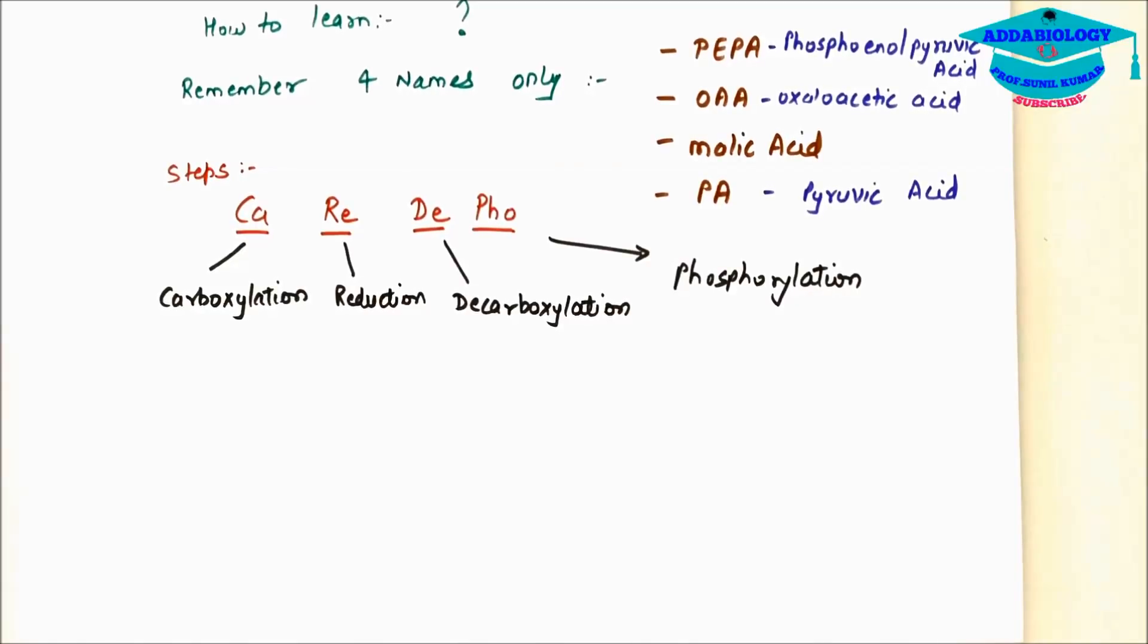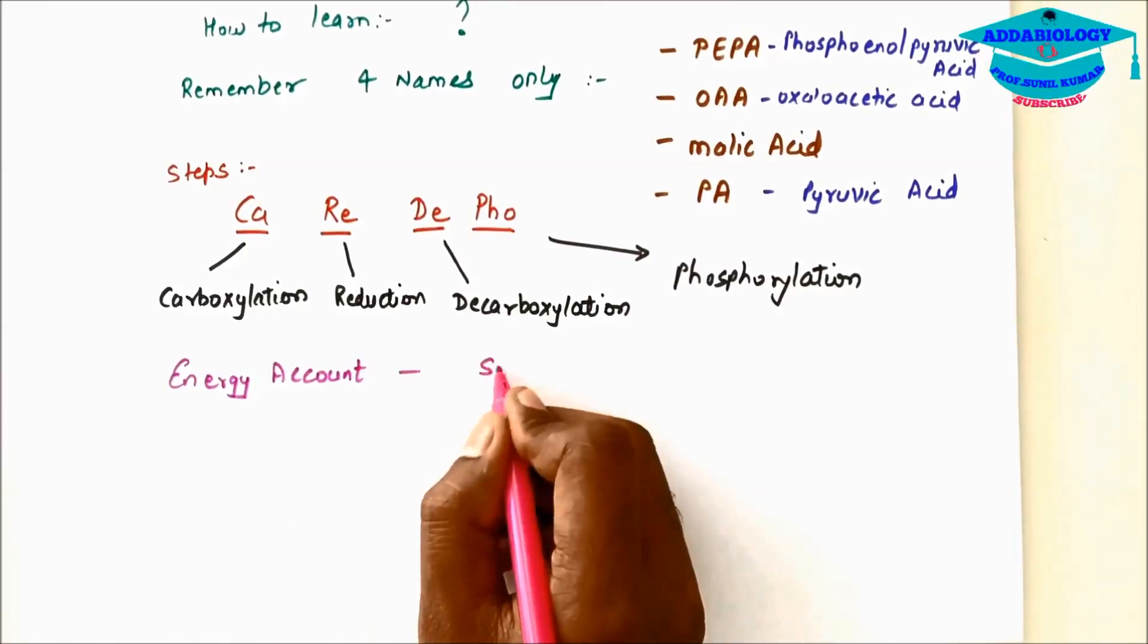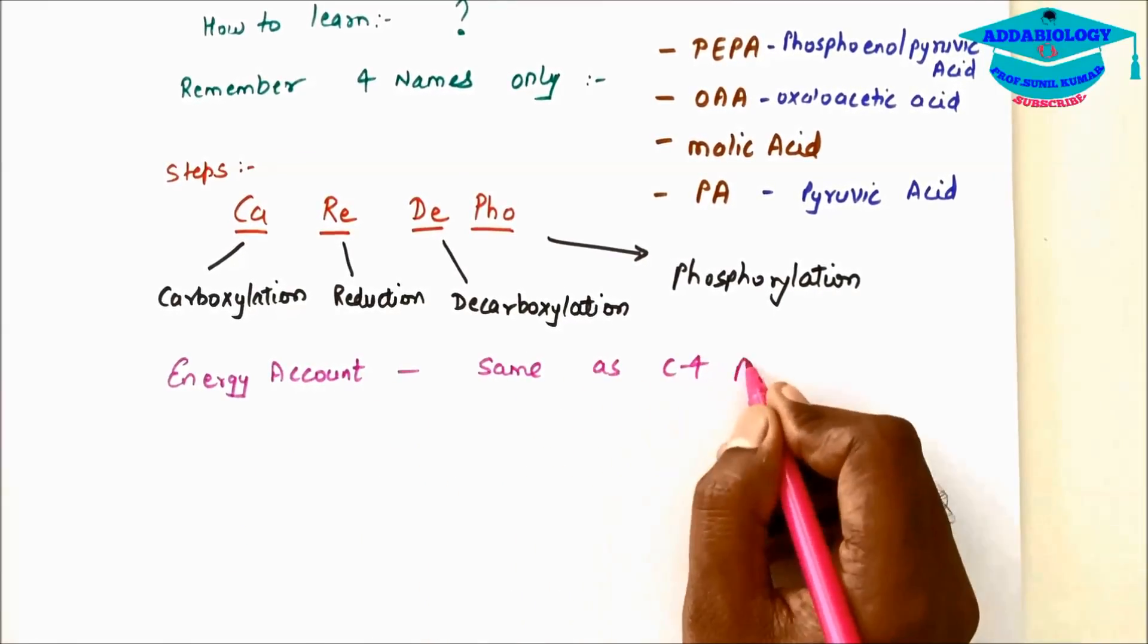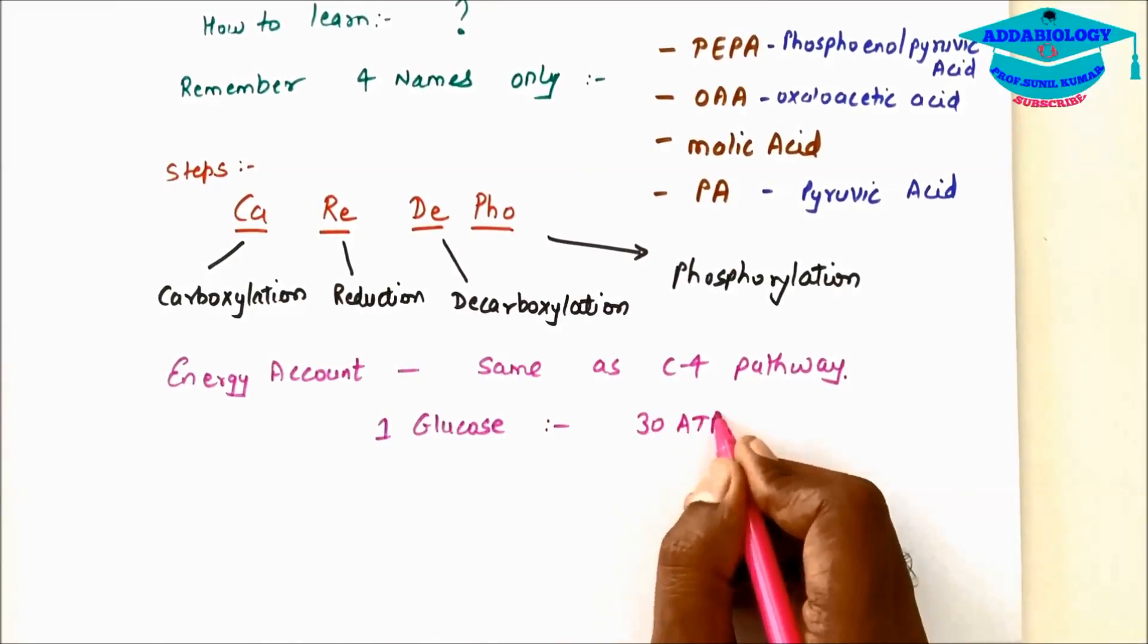When we talk about energy account in CAM pathway, it is same as C4 pathway. So for formation of 1 glucose, 30 ATP and 12 NADPH2 is required.